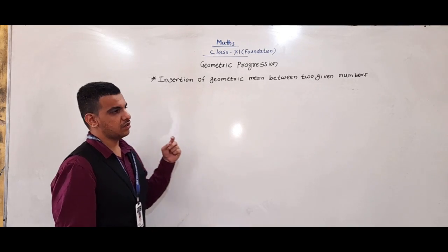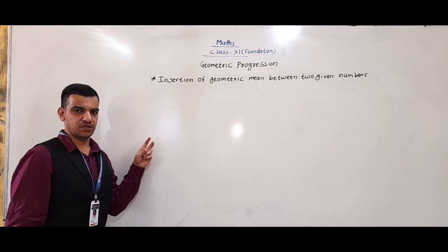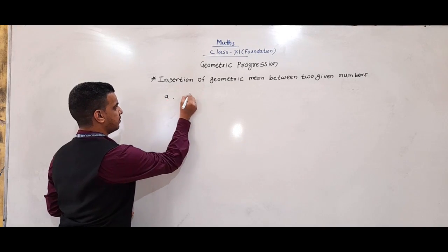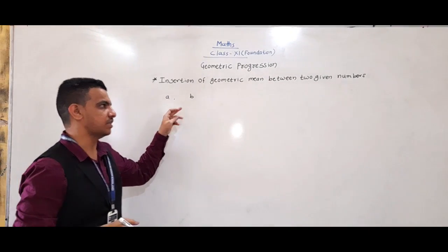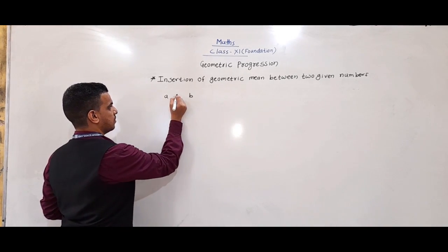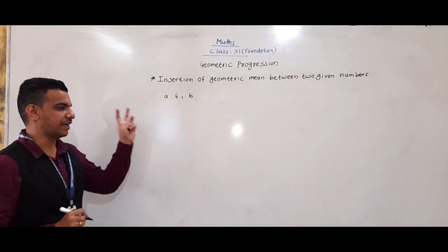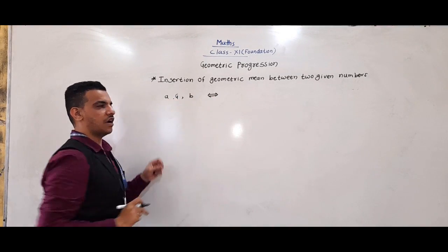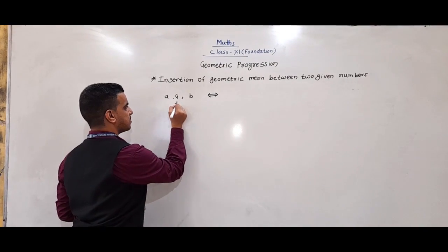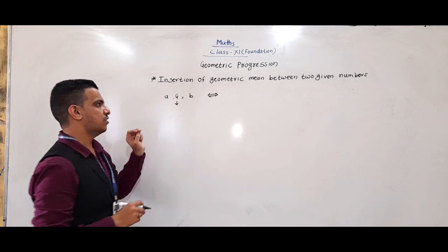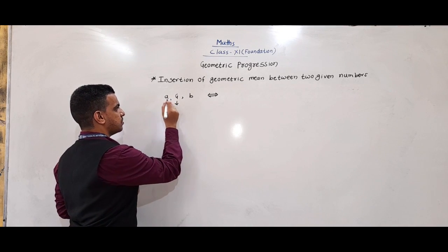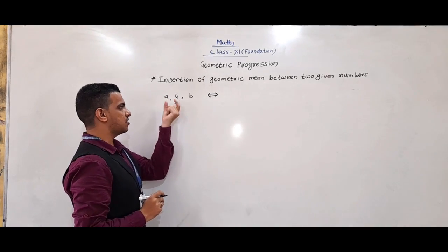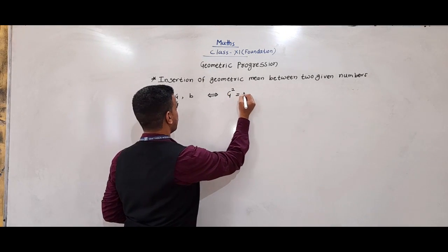Today we are going to learn insertion of geometric mean between two numbers. Suppose two numbers are A and B and we have to insert a single geometric mean between these two numbers. Suppose G is the geometric mean between A and B, meaning A, G, B are in GP. Then G is called the geometric mean of A and B, and G² = AB.